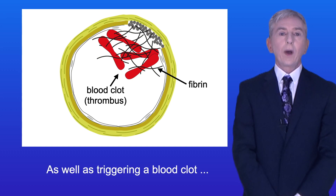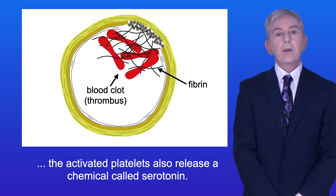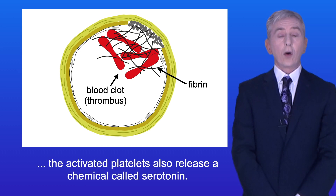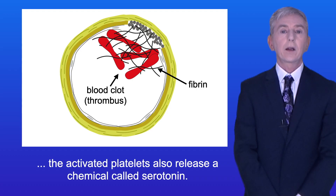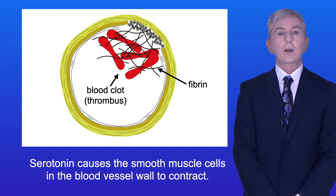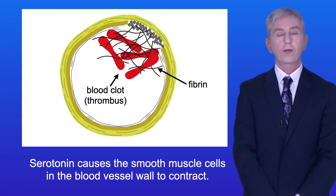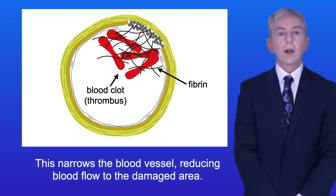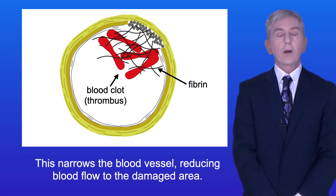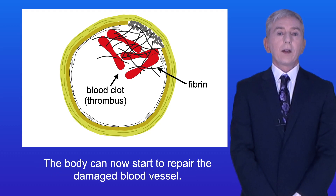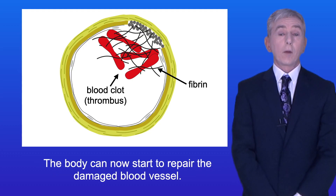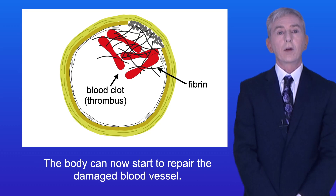As well as triggering a blood clot, the activated platelets also release a chemical called serotonin. Serotonin causes the smooth muscle cells in the blood vessel wall to contract. This narrows the blood vessel, reducing blood flow to the damaged area. The body can now start to repair the damaged blood vessel.